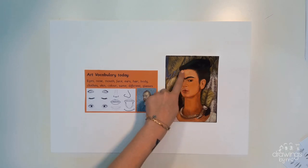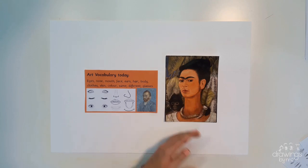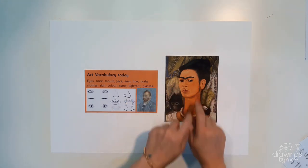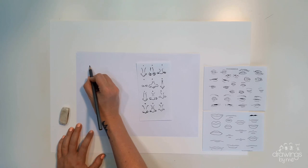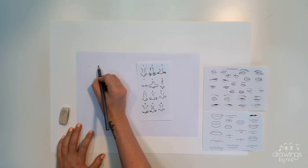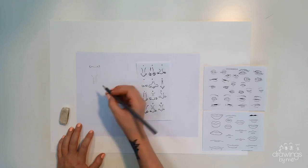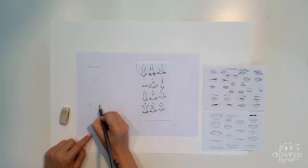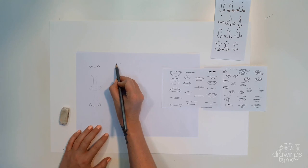If you have a look at what I'm pointing to here, it's Frida Kahlo's portrait of herself. She made sure her eyes and ears are aligned, and it was quite realistic. You can use example sheets of different features as a reference while you choose your favourite way to draw the features that represent you.